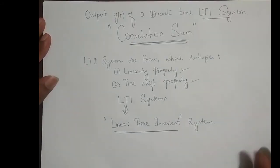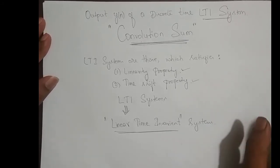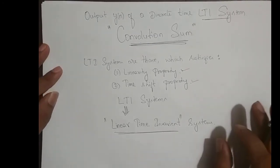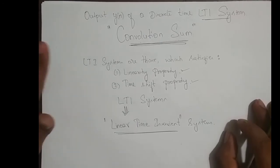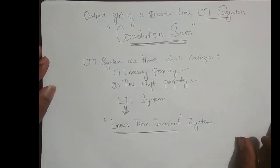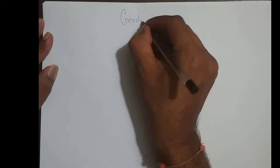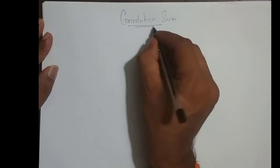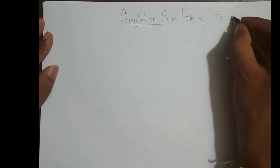From now onwards, when I say system, it is by default an LTI system. Whatever analysis of the system we do from now onwards, all those analyses are with respect to the LTI system. Even if I say just a system, it is basically an LTI system. We will now derive the convolution sum equation — the output of an LTI system.